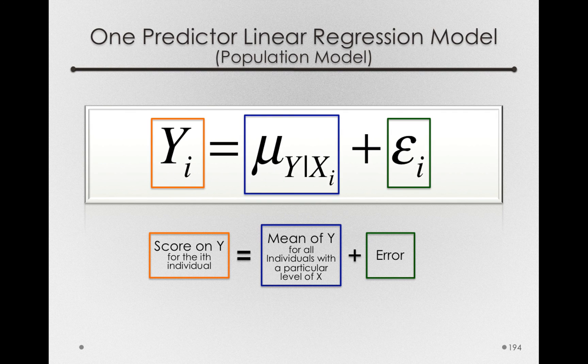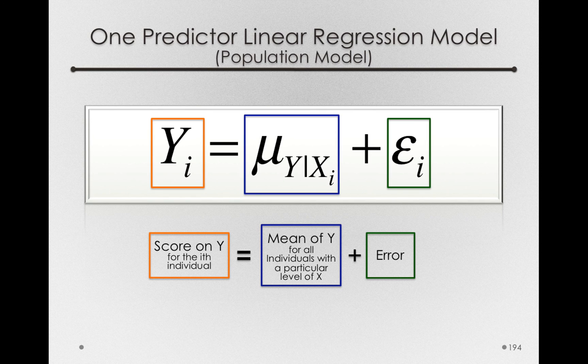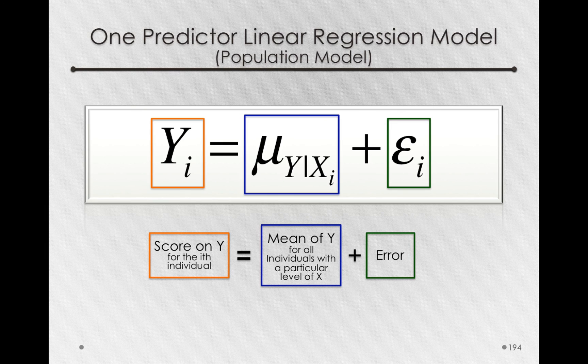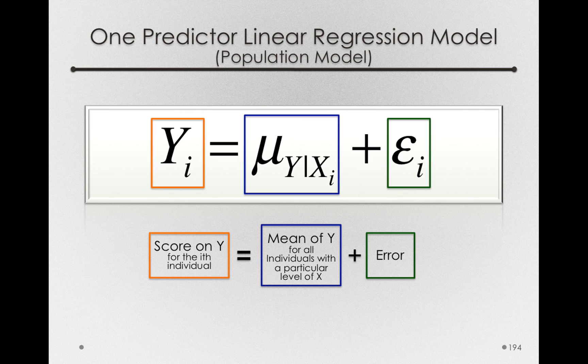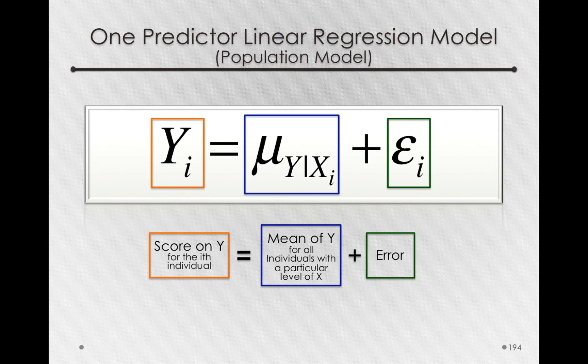Now, what's really clever about this regression model is that even though we're representing in the center portion a group mean, the conditional mean of y given xi, those means are all related to each other. That is, we don't have to represent them all separately in the way we did with a one-factor model. In a one-factor model, we had each of our group means and differences of those group means to the grand mean.